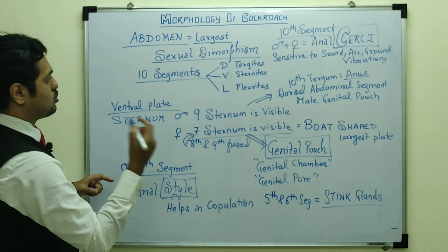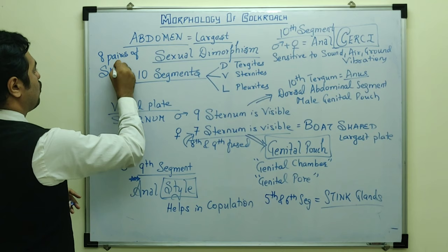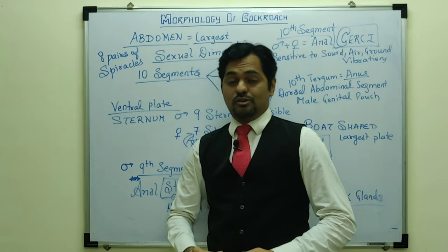In the abdomen there are eight pairs of spiracles which help in breathing — respiration occurs through these spiracles in the abdominal region.